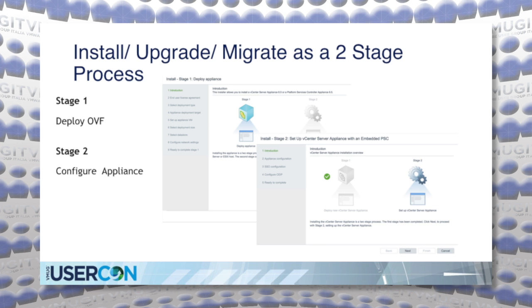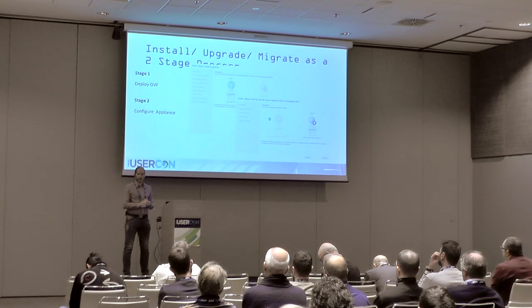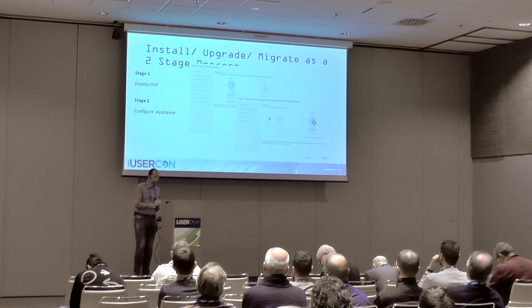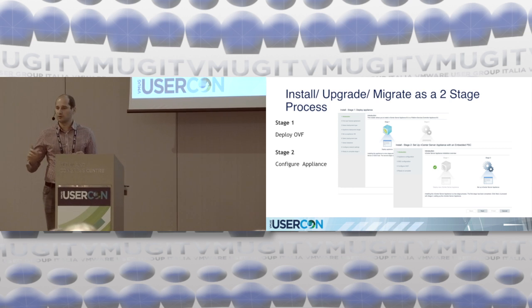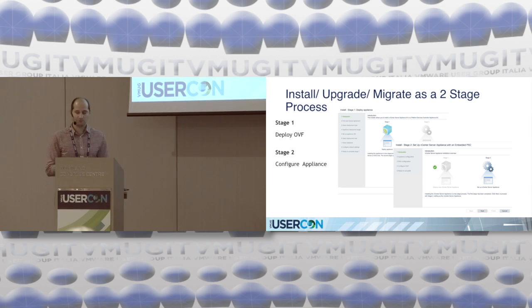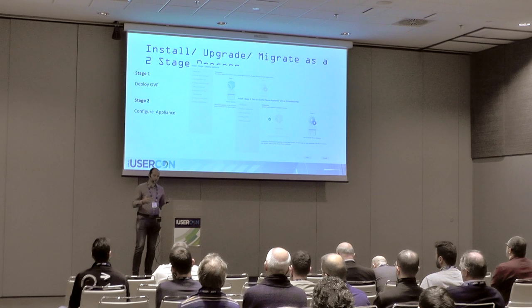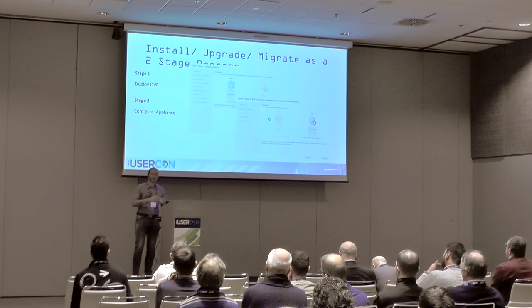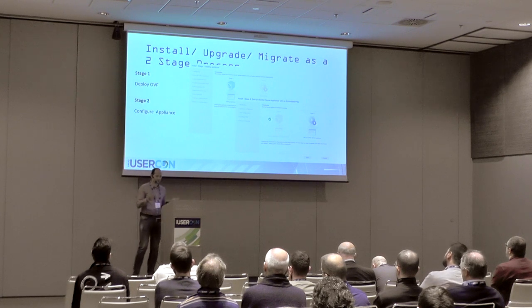Install and upgrade is now a two-stage process. First you deploy the OVF with your preferred tool, then you configure the appliance by going to VAMI on port 5480. You may want to take a snapshot before running stage two — before configuring the appliance. If something goes wrong, you can revert to that snapshot, fix things like DHCP server, DNS server, or DNS entries, and then restart the deployment.